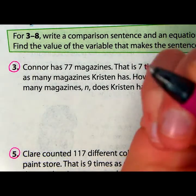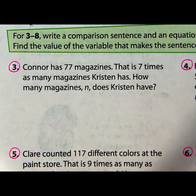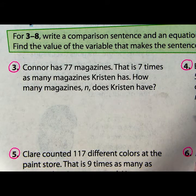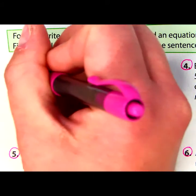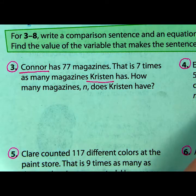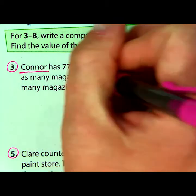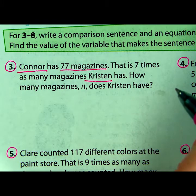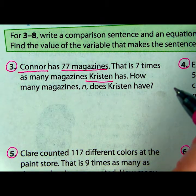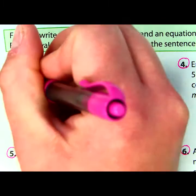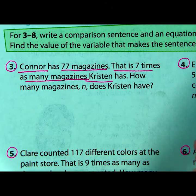In example number three, it looks like we're comparing the number of magazines that Connor has to the number of magazines Kristen has. So we're comparing Connor to Kristen — that's our comparison. Connor has 77 magazines. They've told us how many Connor has. That is seven times as many magazines that Kristen has.